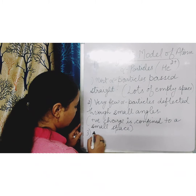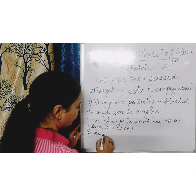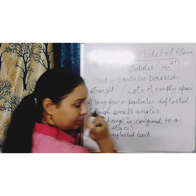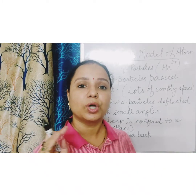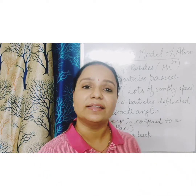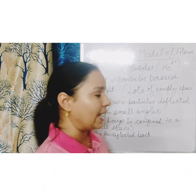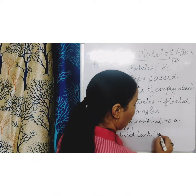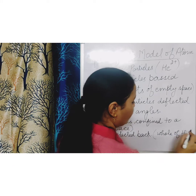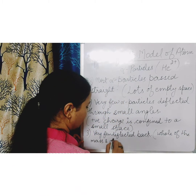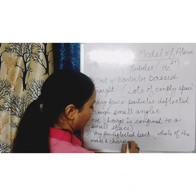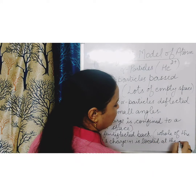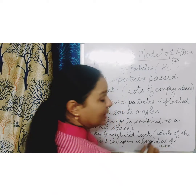Inference number three: very few alpha particles deflected back. These had directly collided with the center of the atom and returned back completely at an angle of 180 degrees. So that showed that the whole of the mass and the positive charge is located at the center of the atom.